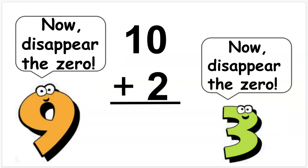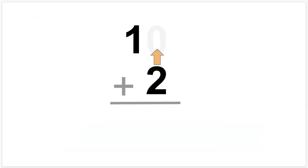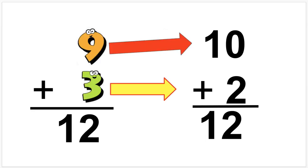Now disappear the zero. You can watch Mrs. Sullivan's Disappearing Zero math trick if you don't know what this is, or stay tuned — here it comes, disappear the zero! So nine plus three is 12, just like ten plus two is 12. But sometimes making a nine a ten and then disappearing the zero really helps us to visualize more easily.